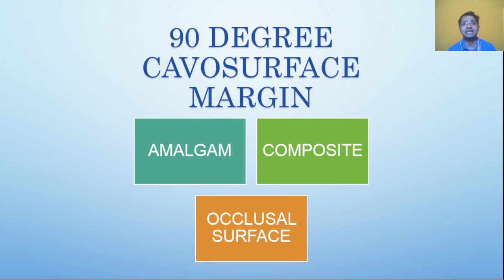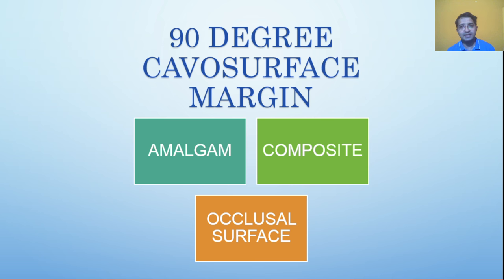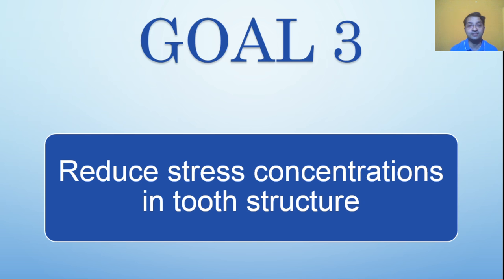Please remember that a 90-degree cavosurface margin is important for both amalgam and composite. We tend to think that composites always need a bevel, but for Class 1 cavity preparations where vertical forces are expected, a 90-degree cavosurface margin is required. For amalgam and composite on occlusal surfaces, we do not give any bevel — we must have a 90-degree cavosurface margin. This is also a very important exam question.